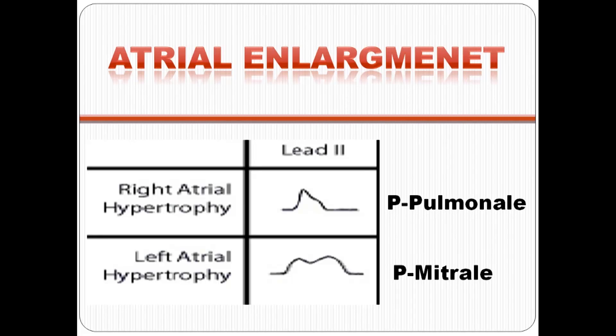For atrial enlargement: right atrial hypertrophy in lead 2 is called P pulmonale, and left atrial hypertrophy is called P mitrale.